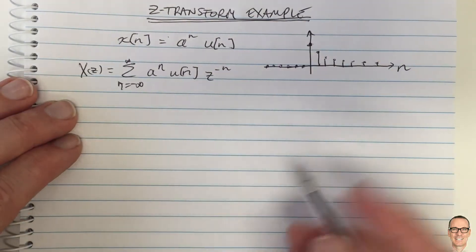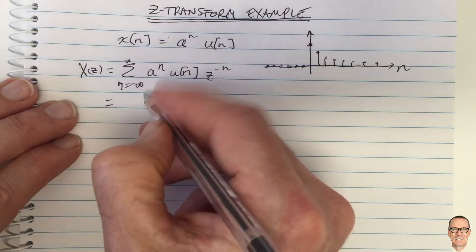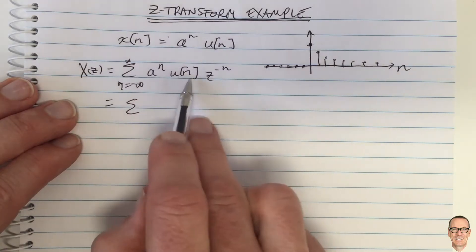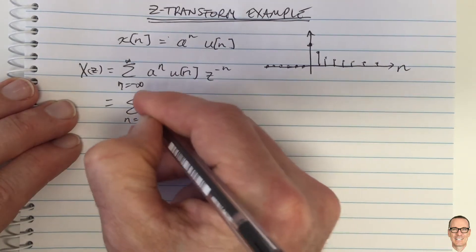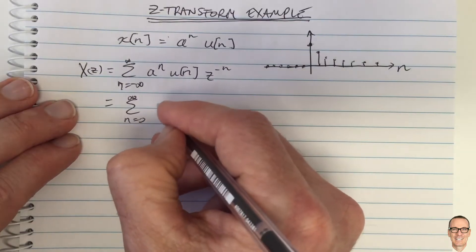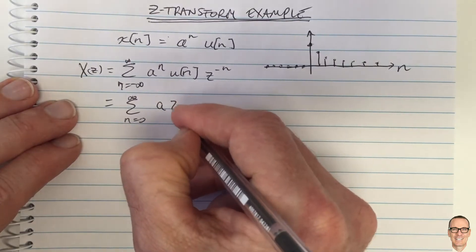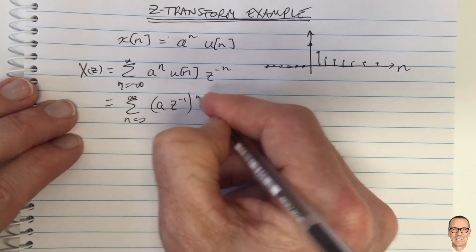This is the formula for the Z-transform. And so this equals, because of the un function, we can sum from 0 to infinity of a Z to the minus 1 to the power of n.